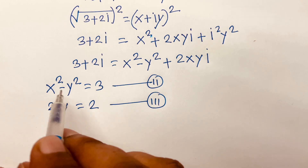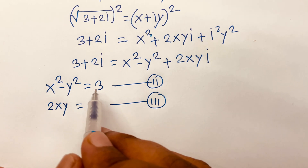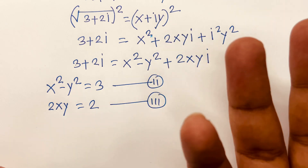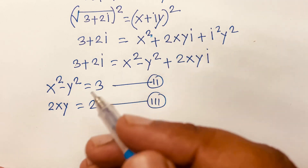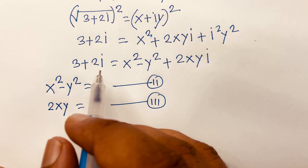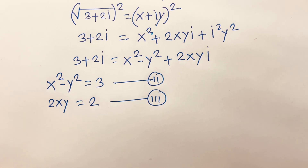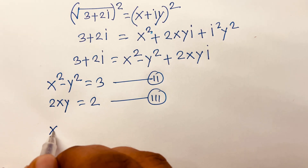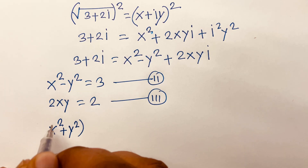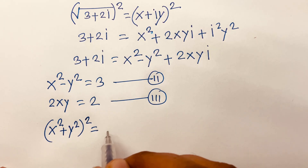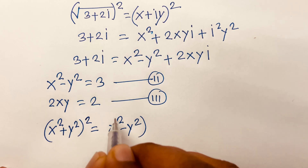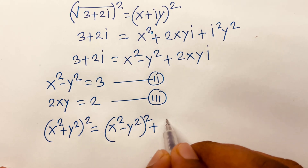We know that x² minus y² equals 3. Now we find x² plus y². We know the identity: (x² plus y²)² equals (x² minus y²)² plus 4x²y².